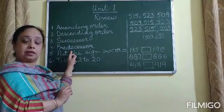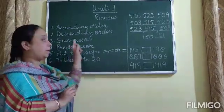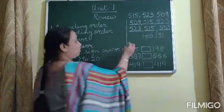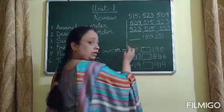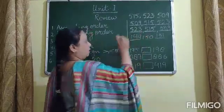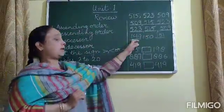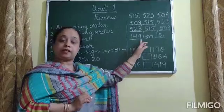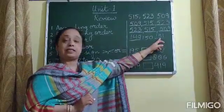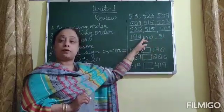Then is predecessor. What is predecessor? Predecessor is one number before. So, the predecessor of 150 will be 149. So, 149 is the predecessor of 150, and 151 is the successor of 150.